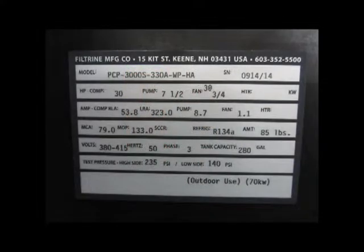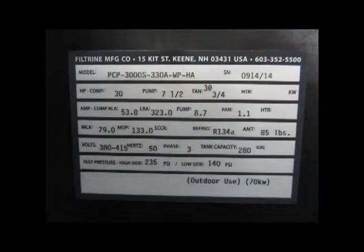On the back side of the electrical box door, each unit will also have a unit tag. This tag will identify the serial number and model number of the unit, along with performance and technical information on the chiller. A copy of this tag can also be found in the manual.